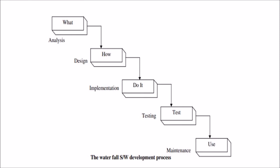A waterfall system consists of the following phases: analysis, design, implementation, testing, and maintenance. In the analysis phase we verify what we have to do. In the design phase we describe how we can do it. In the implementation phase we do it. In the testing phase we ensure the quality of the product. Finally, in the maintenance phase we use the product and analyze defects and future enhancements to make the system better performing.